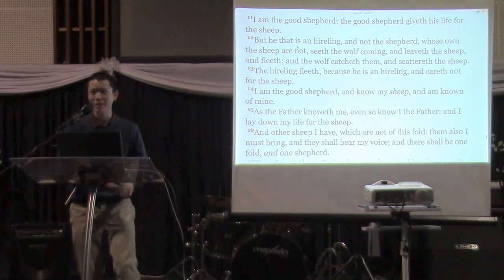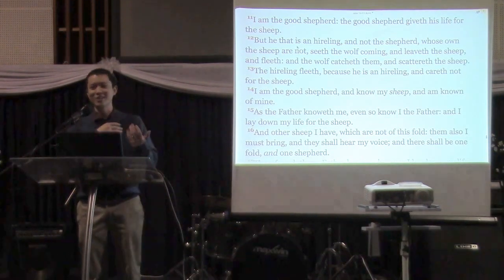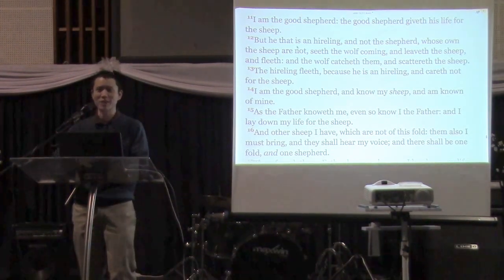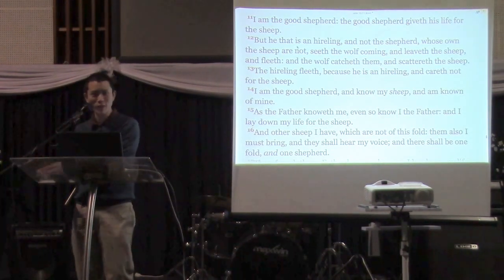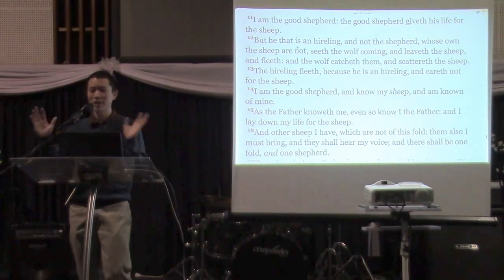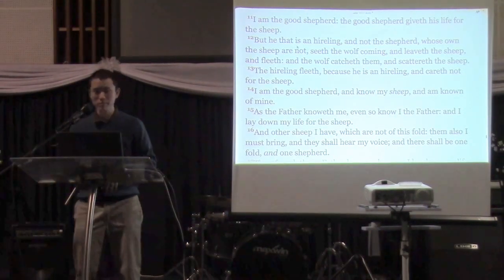So WA will have 12 senators, South Australia will have 12 senators, New South Wales will have 12 senators, and there's something like 76 senators all up.